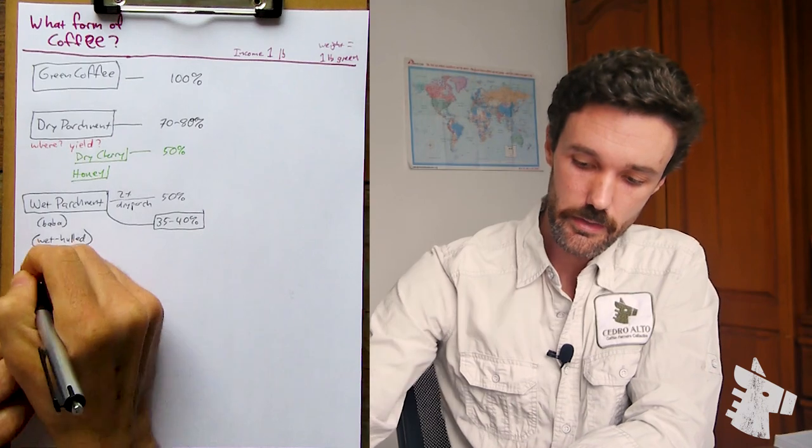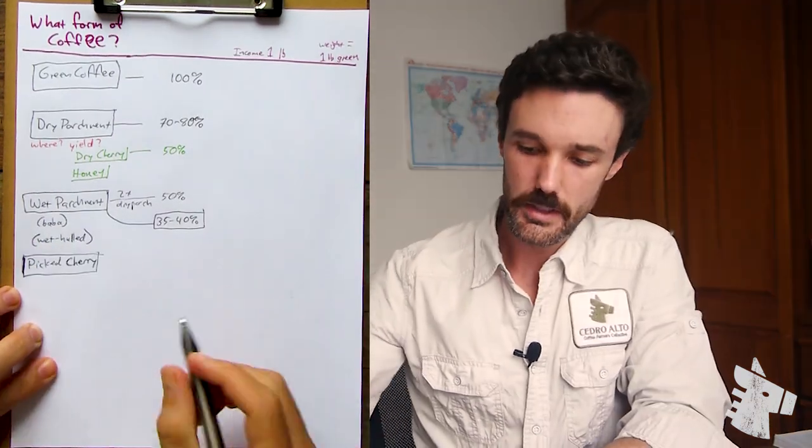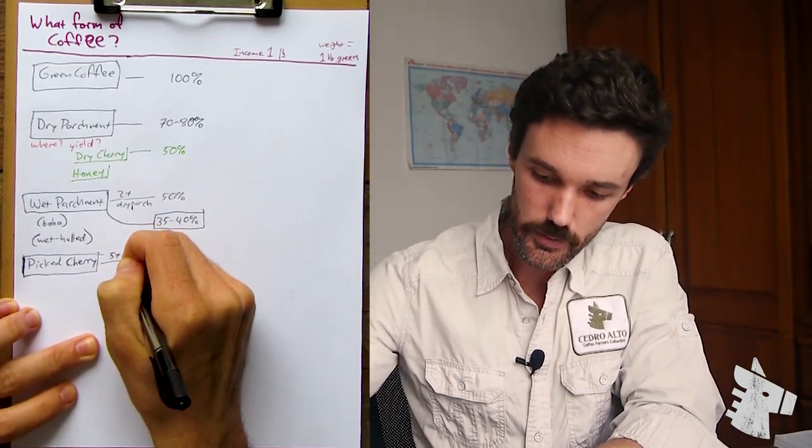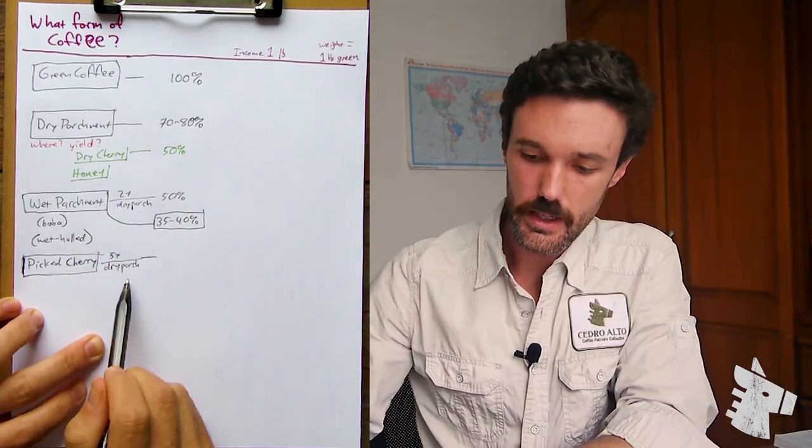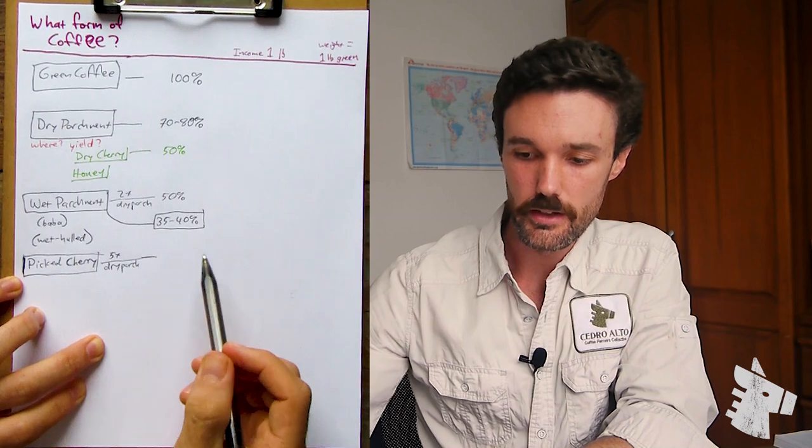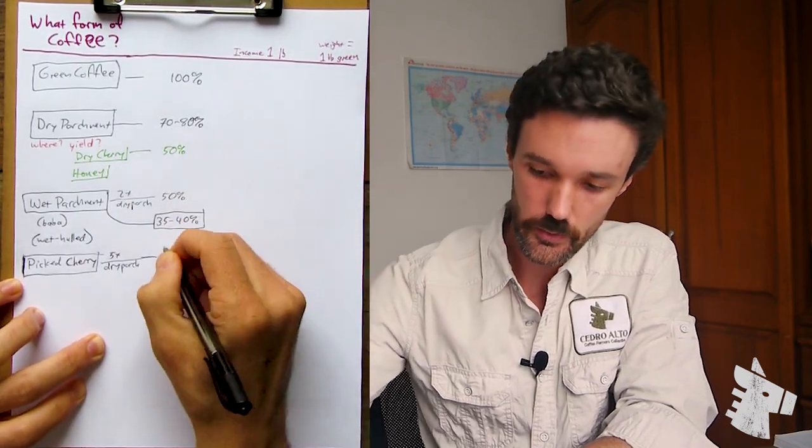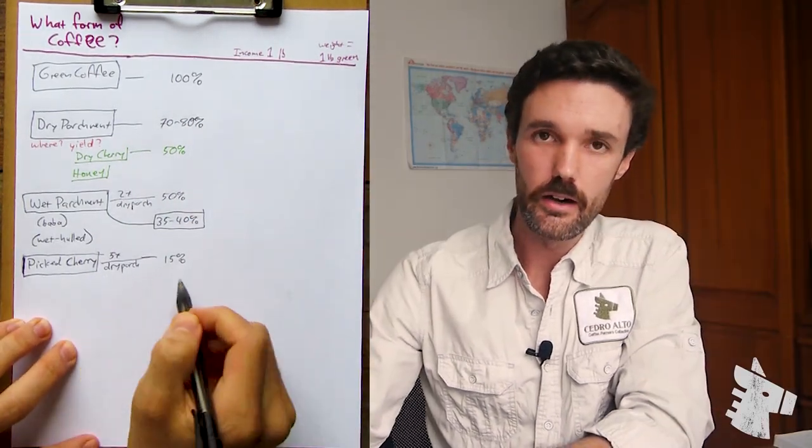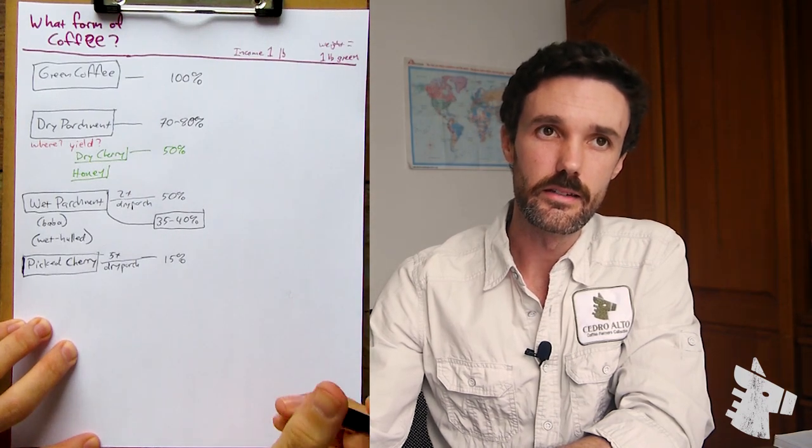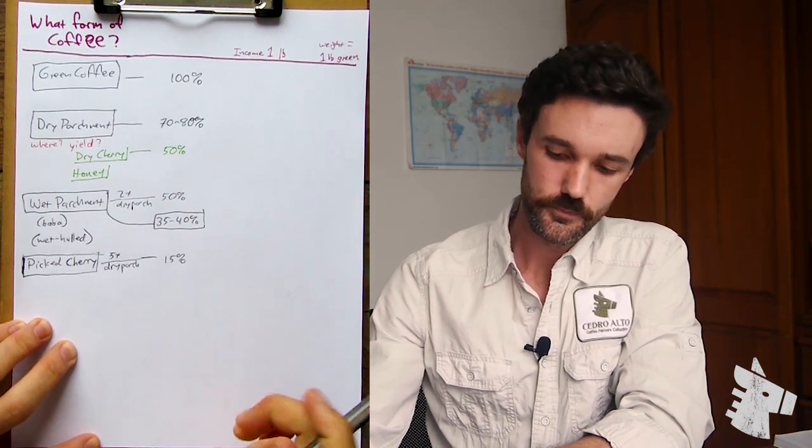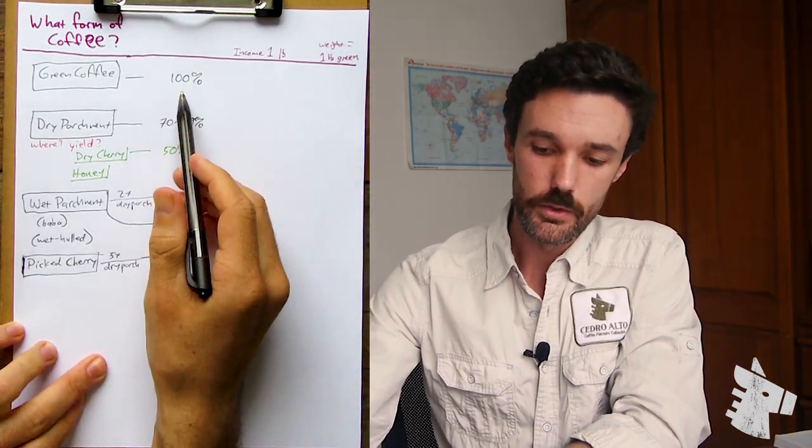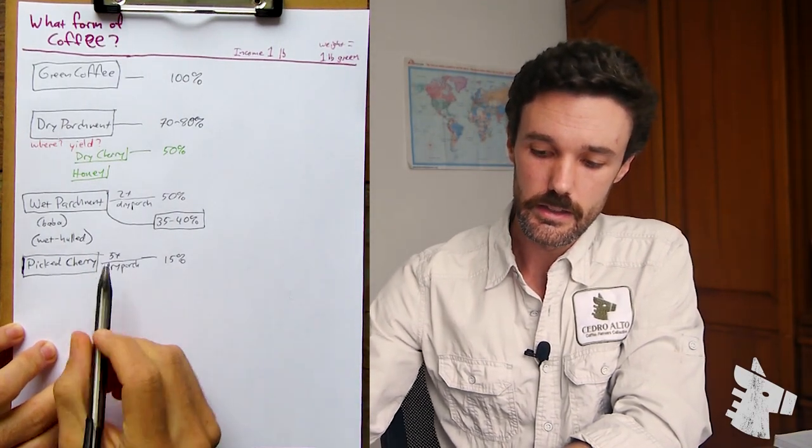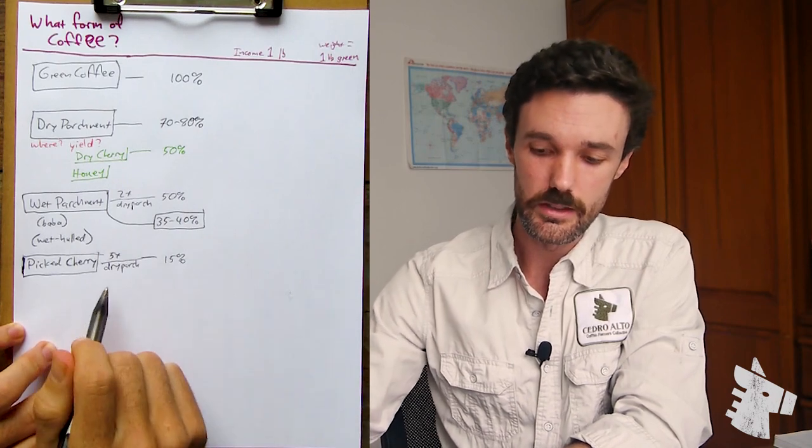And then on down the line, this could be picked cherry. So if a farmer is selling picked cherry, a typical conversion, nice round number, would be five to one, so five times dry parchment. So if 20% of the picked cherry is dry parchment, and about 75% of dry parchment is green coffee, 15% of the weight of picked cherry constitutes green coffee. This number can vary, and when cherry's being sold, the calculation method can vary as well. How the value of the green coffee that is produced from picked cherry that's sold by a farmer can also vary quite widely.